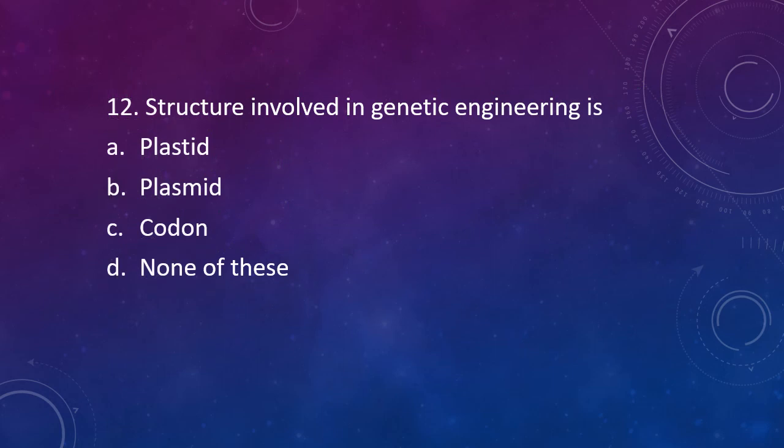Question 12: Structure involved in genetic engineering is? Option A: Plasted. Option B: Plasmid. Option C: Codon. Option D: None of these. The correct answer is Option B — Plasmid. It is an extra nuclear chromosomal material which can be used as a vector to transfer genes in genetic engineering.